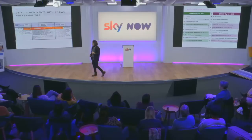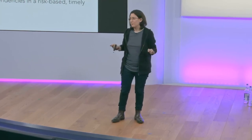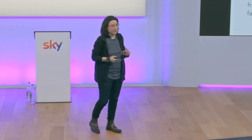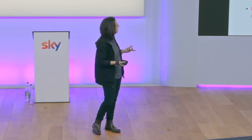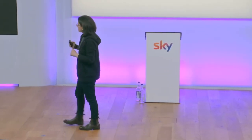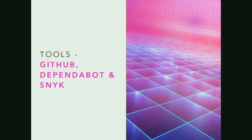We're going to talk about 'using components with known vulnerabilities.' How do you know if your application is vulnerable? If you don't know the versions of all components you're using, don't scan for vulnerabilities regularly, or don't fix or update your platform. You can prevent it by removing unused dependencies, inventorying both client-side and server-side components, and obtaining components from official sources — because attackers can trick you into downloading malicious packages.